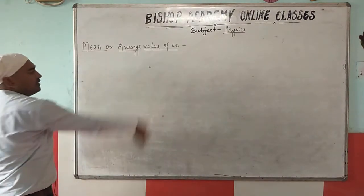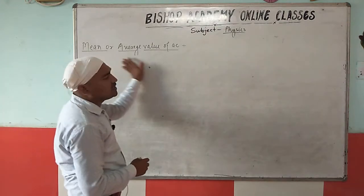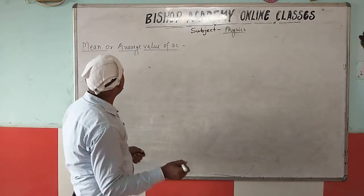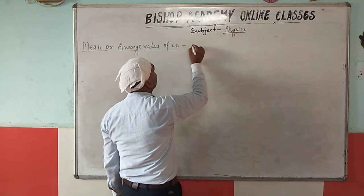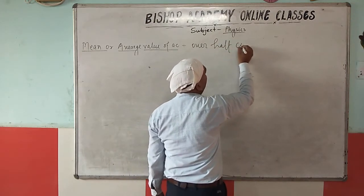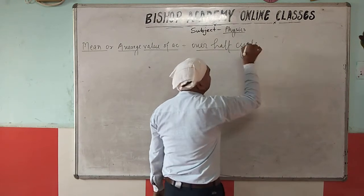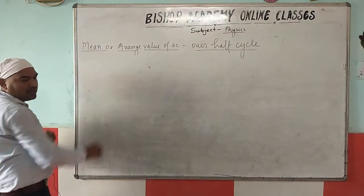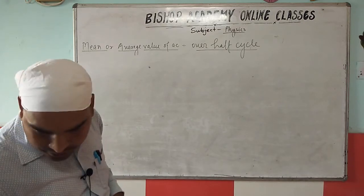So we have learned two things: the average value over a complete cycle is zero, and AC is not measured with a moving coil galvanometer but with a hot wire galvanometer based on the heating effect. Now we come to our main topic — the mean or average value of AC. Since we cannot take the average over a complete cycle (it gives zero), we always take the mean or average value over a half cycle.